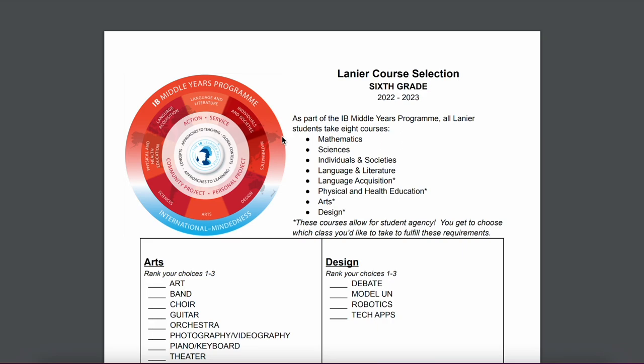Lanier Middle School is part of the IB Middle Years Program, and so because of that all students take these eight courses. However, within four of those you have a little bit of agency — that means you get to choose an elective that you'd like to fulfill those requirements.